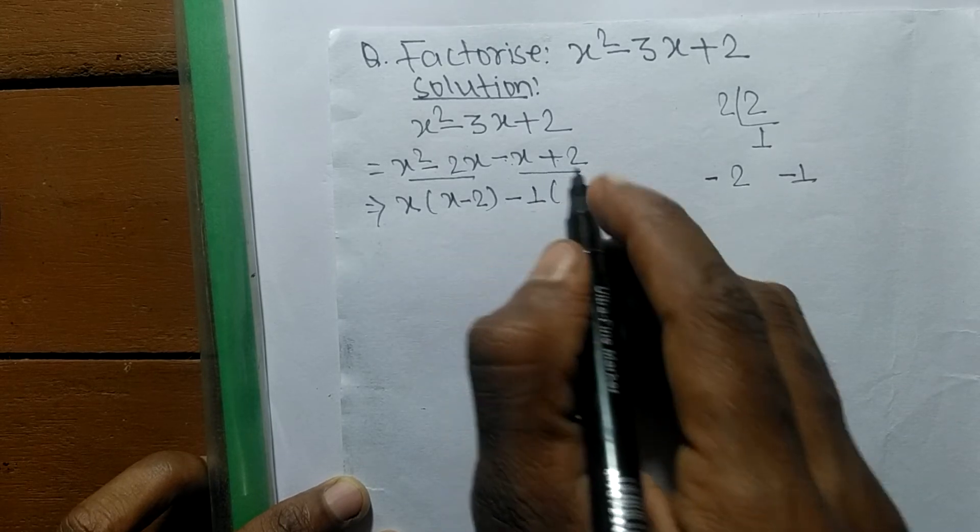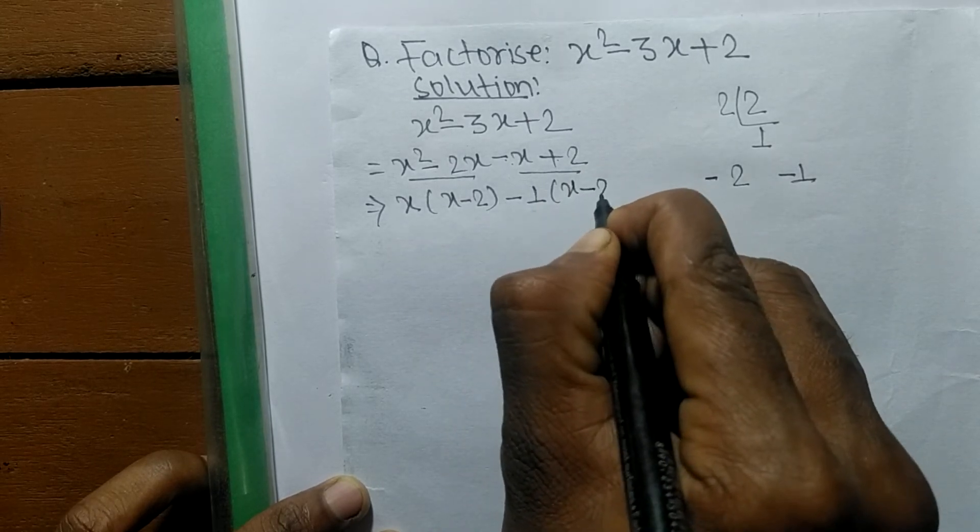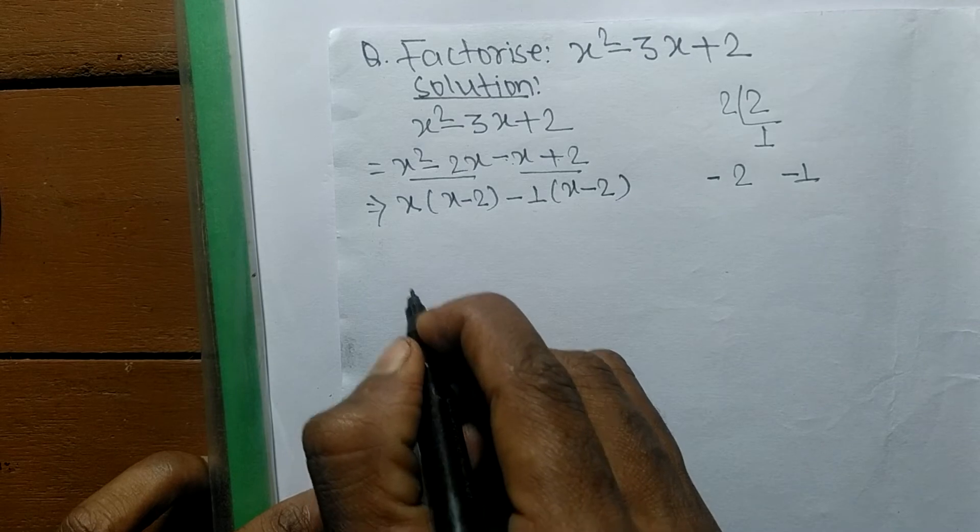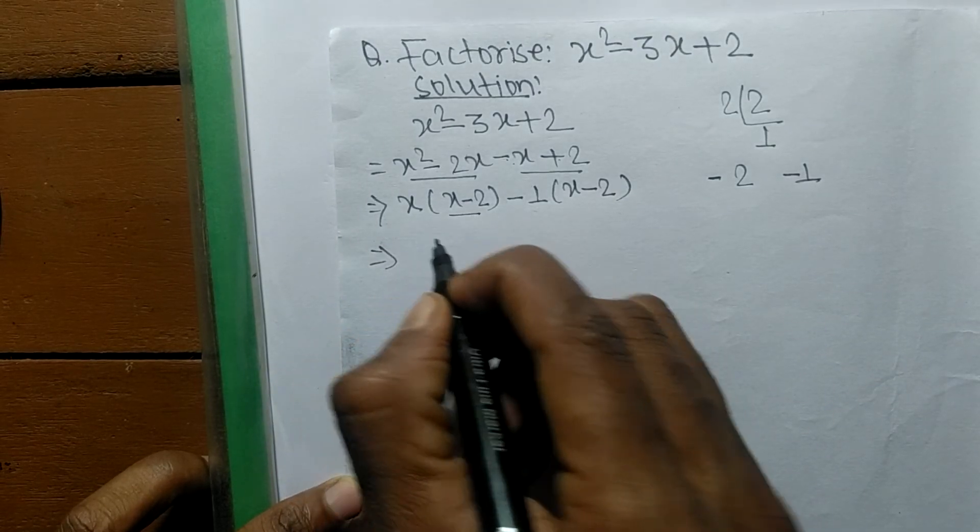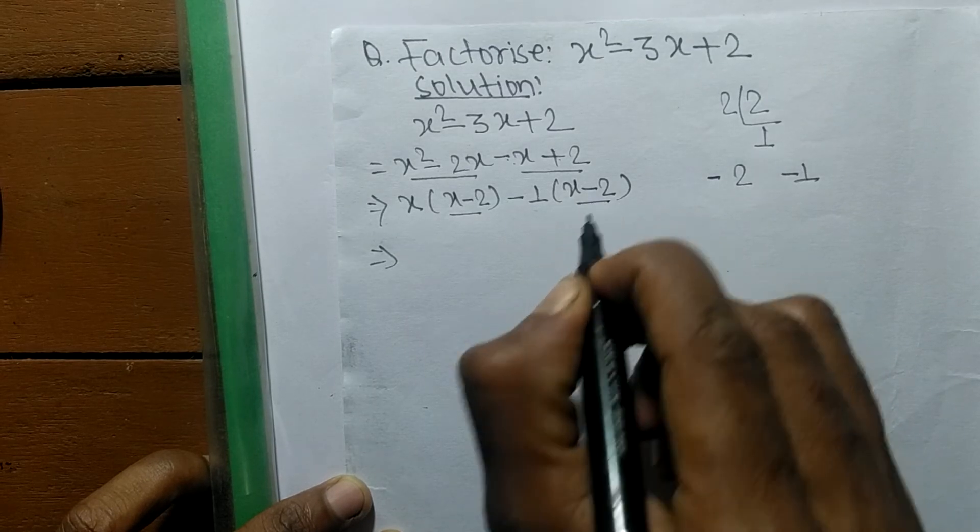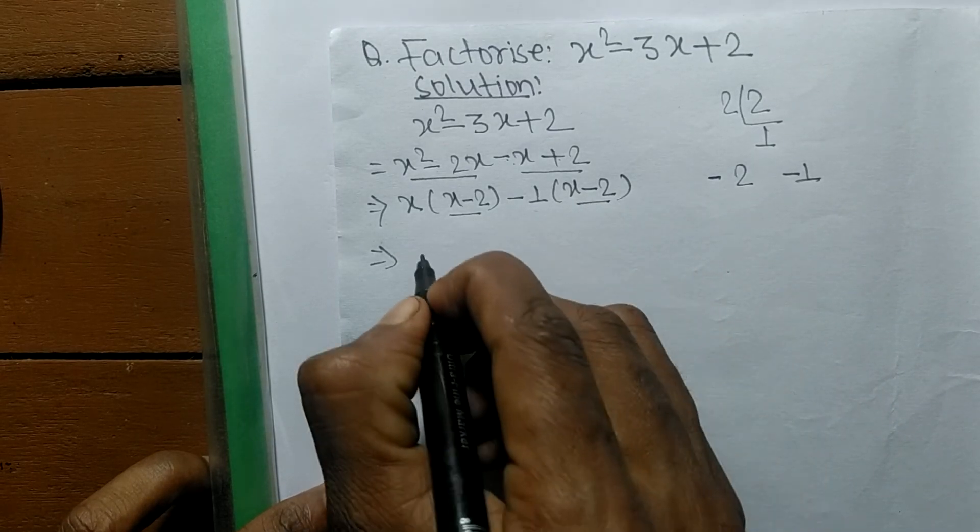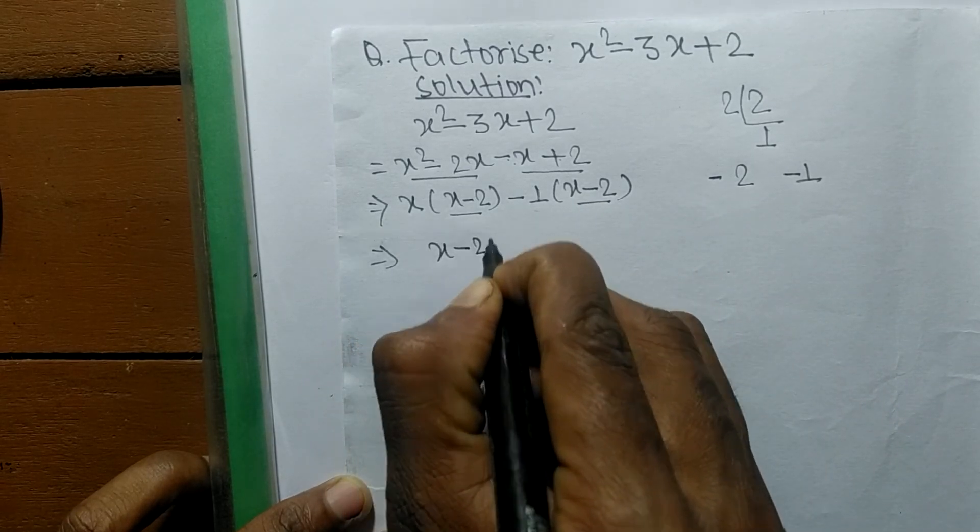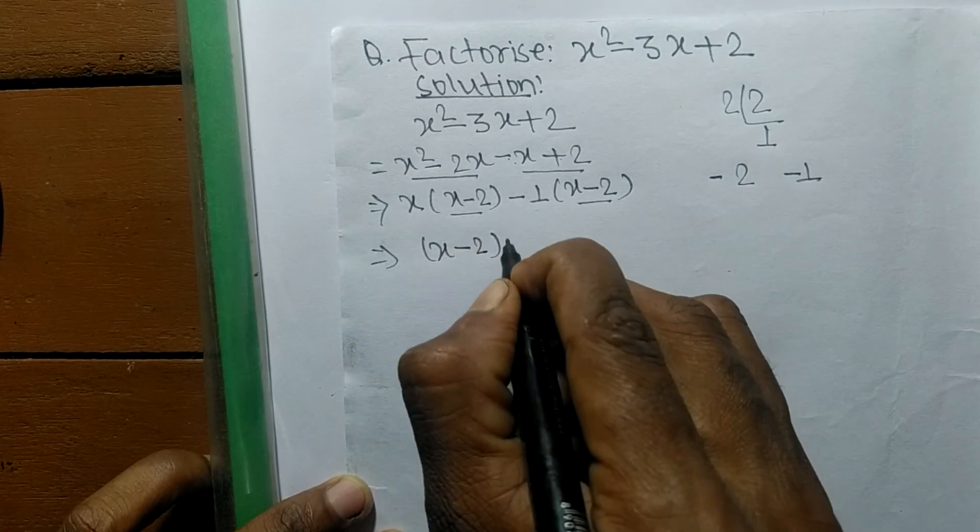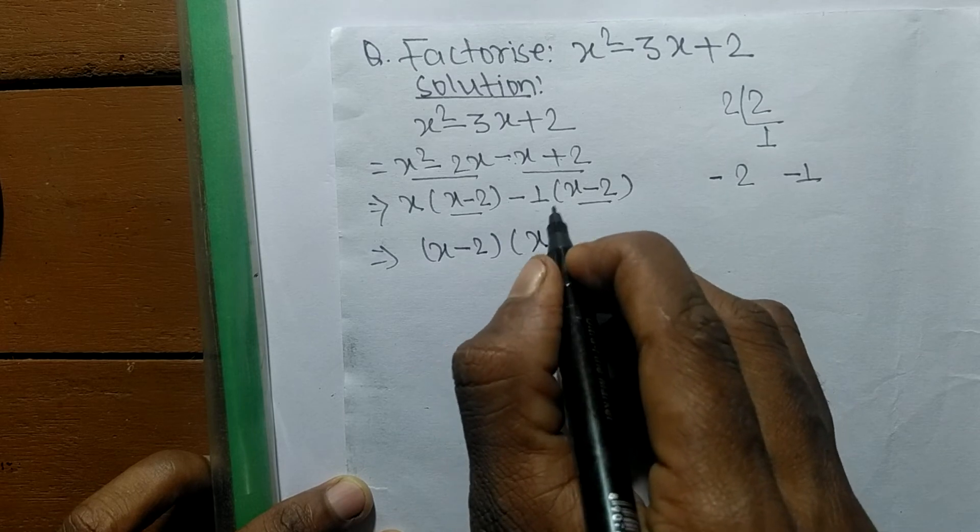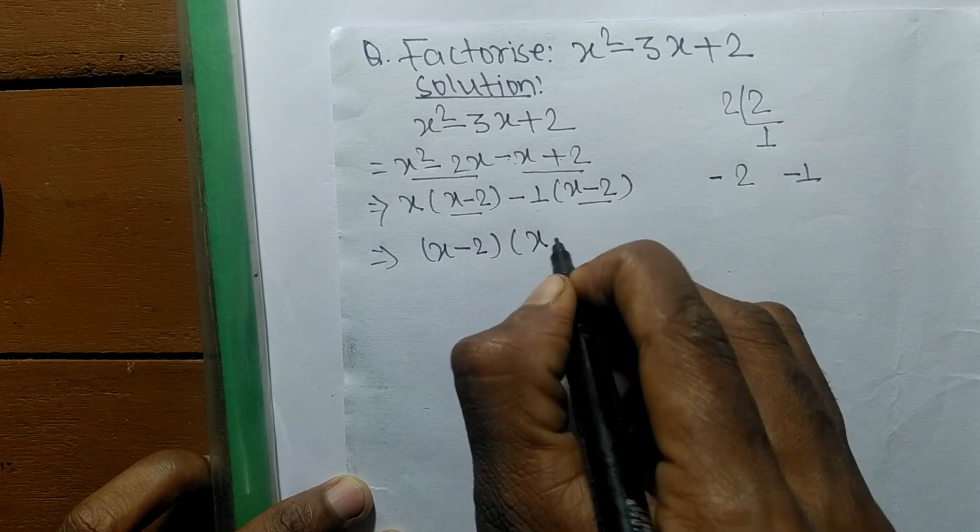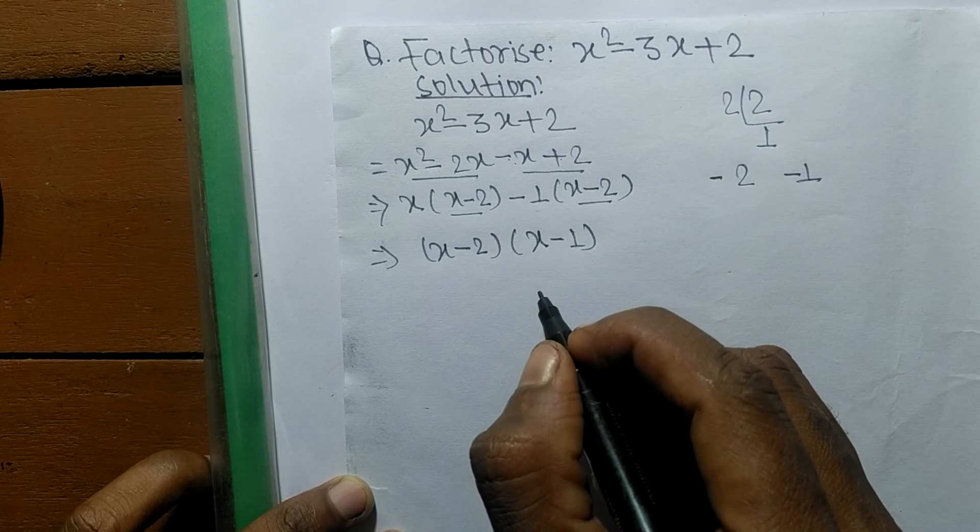As you can see, here is also x minus 2, and here is also x minus 2. So in both the common term is x minus 2. In the first the remaining is x, and in the second the remaining here is minus 1.